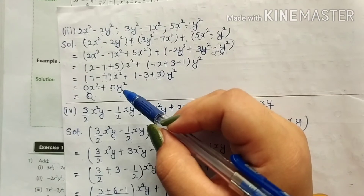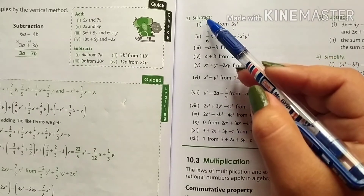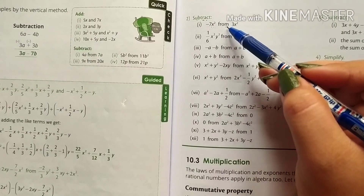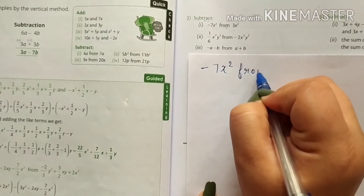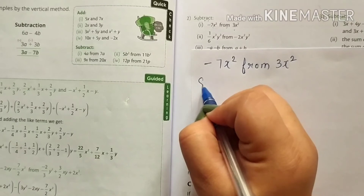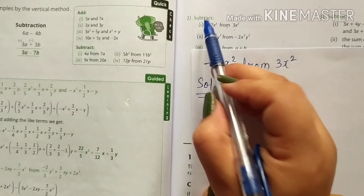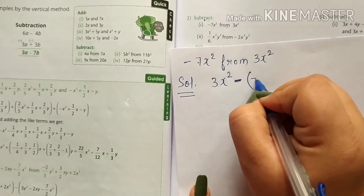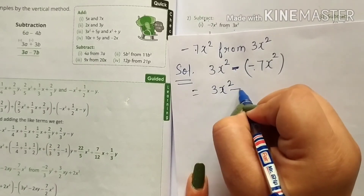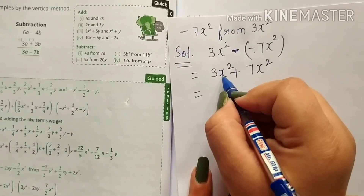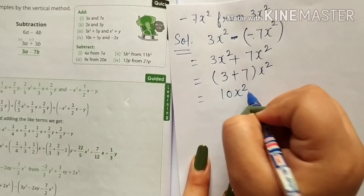Now you can solve the remaining sums of this part. Let's start the second part: subtract minus 7x square from 3x square. Solution: 3x square minus minus 7x square, which becomes 3x square plus 7x square. Taking x square as common: 3 plus 7 is 10x square.